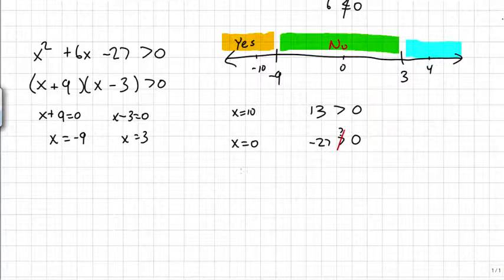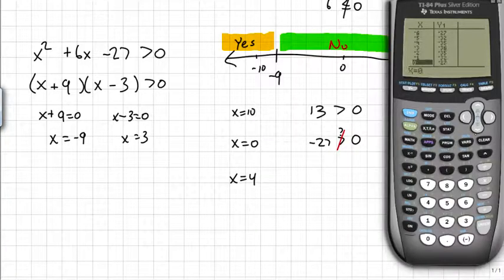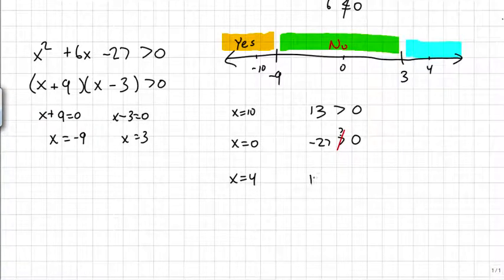And my last region I want to test is when x is 4. And if I come down the table, I find when I substitute a 4 into that inequality, 13 comes out. So 13 is greater than 0, so I'll say that's a yes.